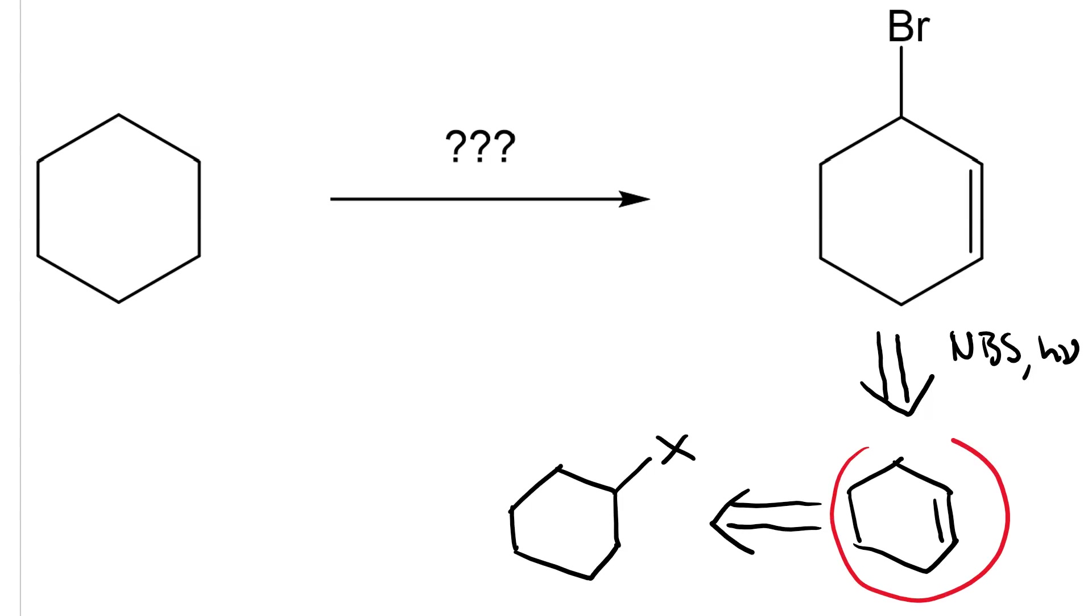We could get the cyclohexene by an elimination reaction from a cyclohexyl halide, and the reagent we'd need is just a strong base.